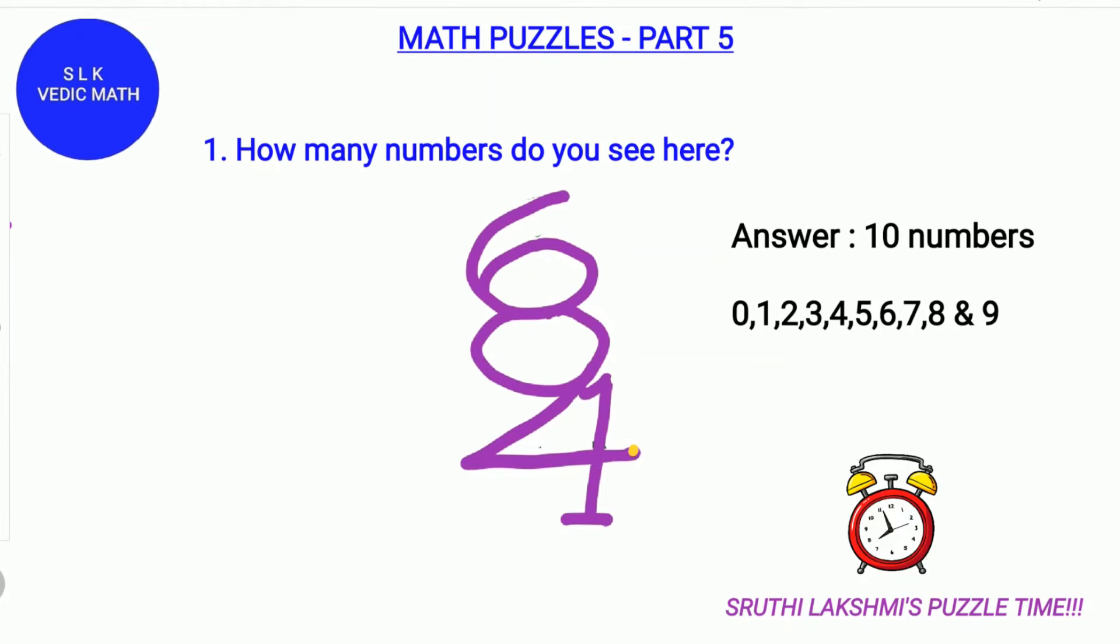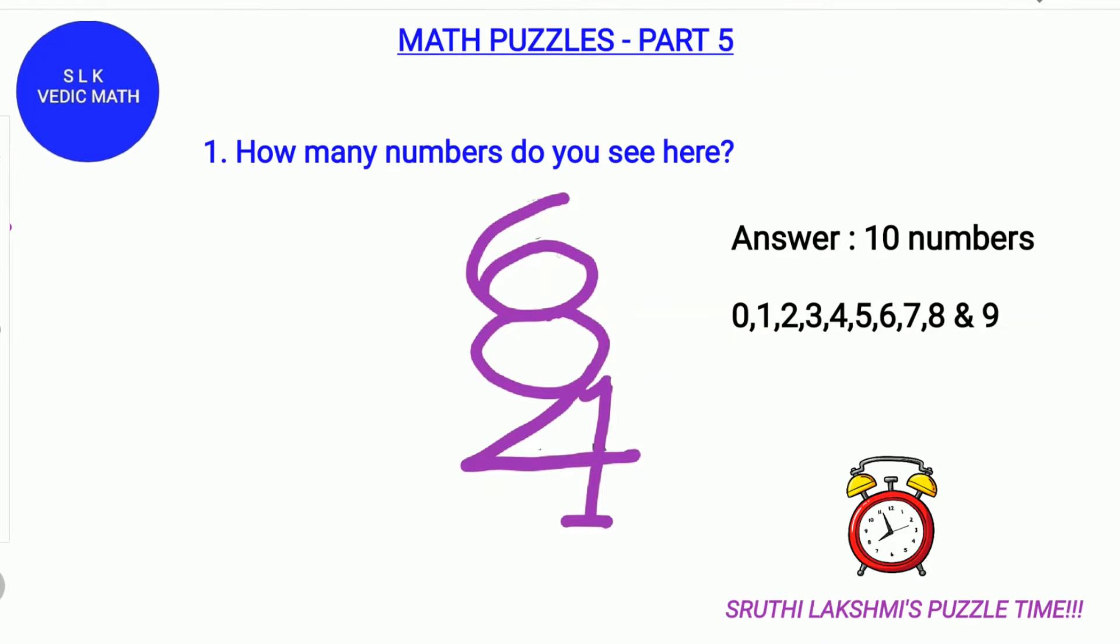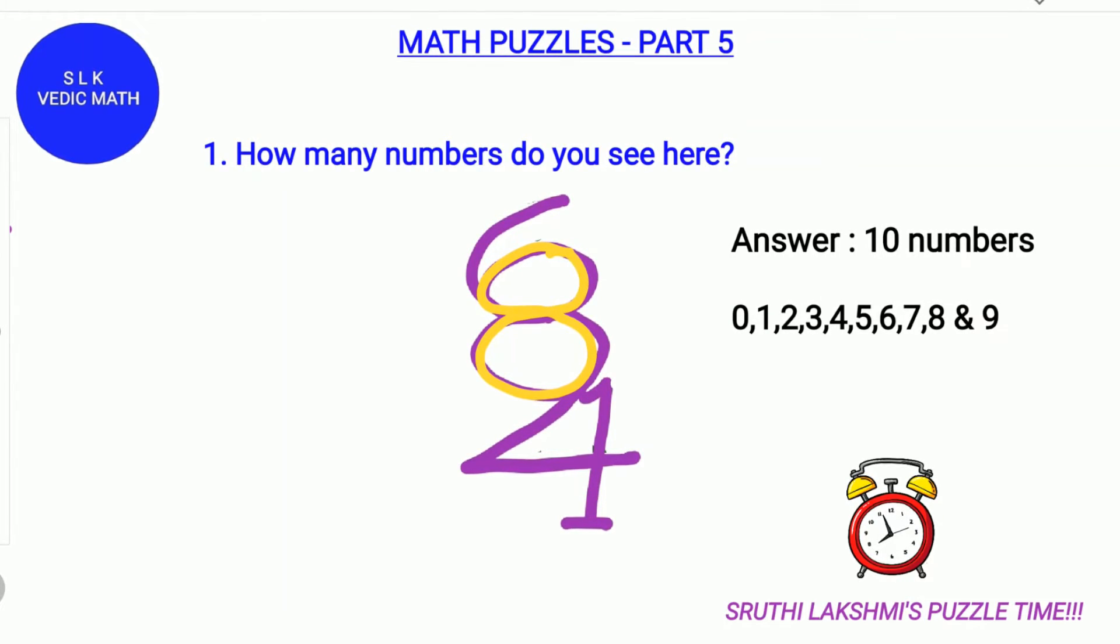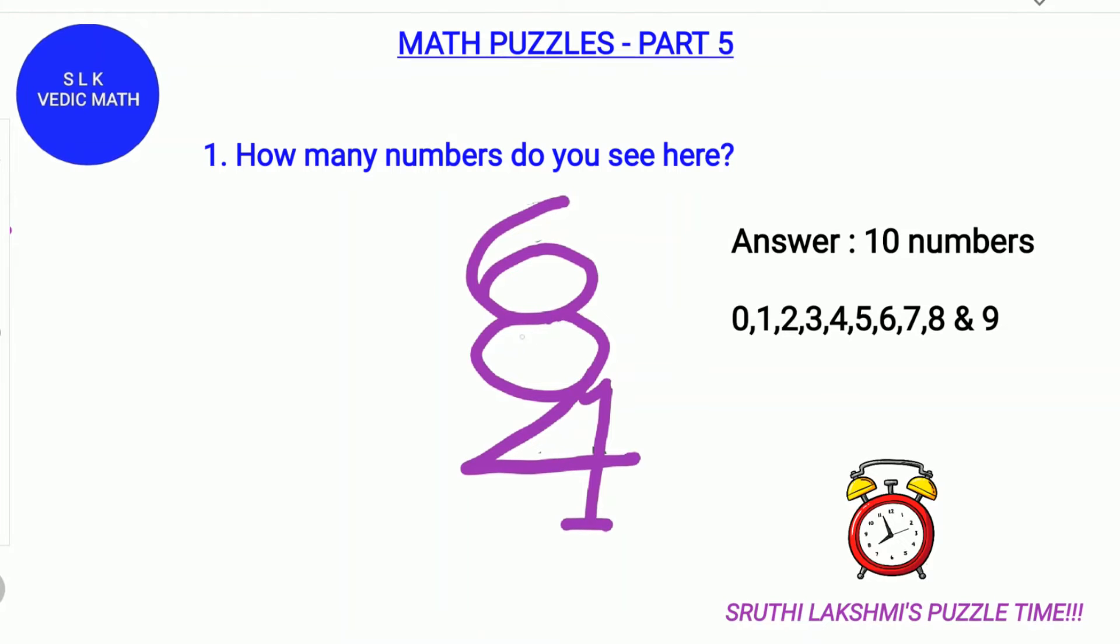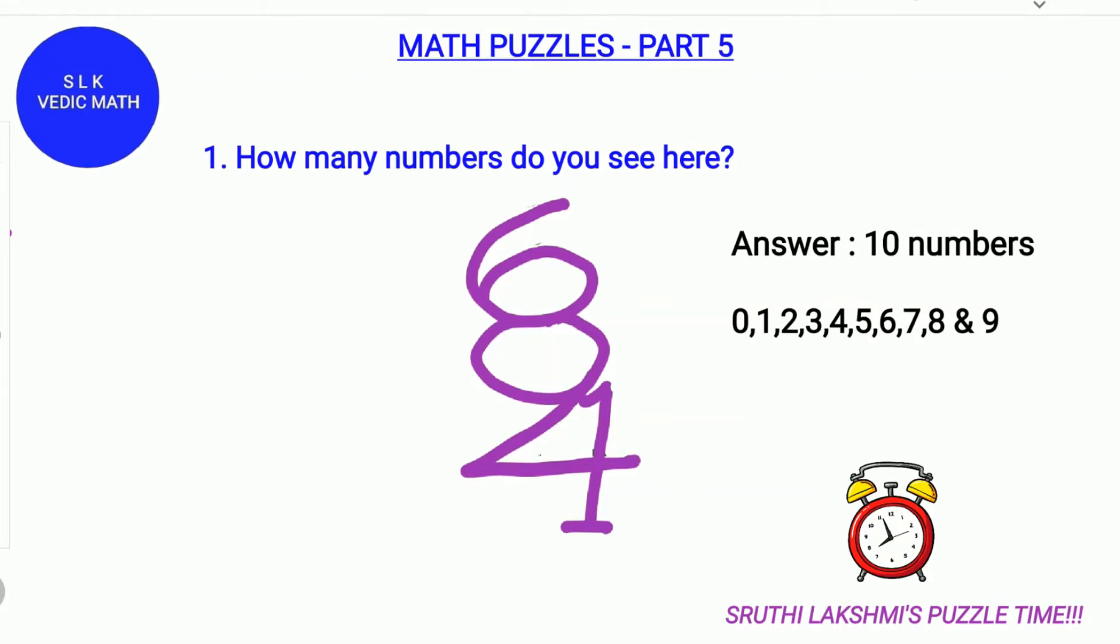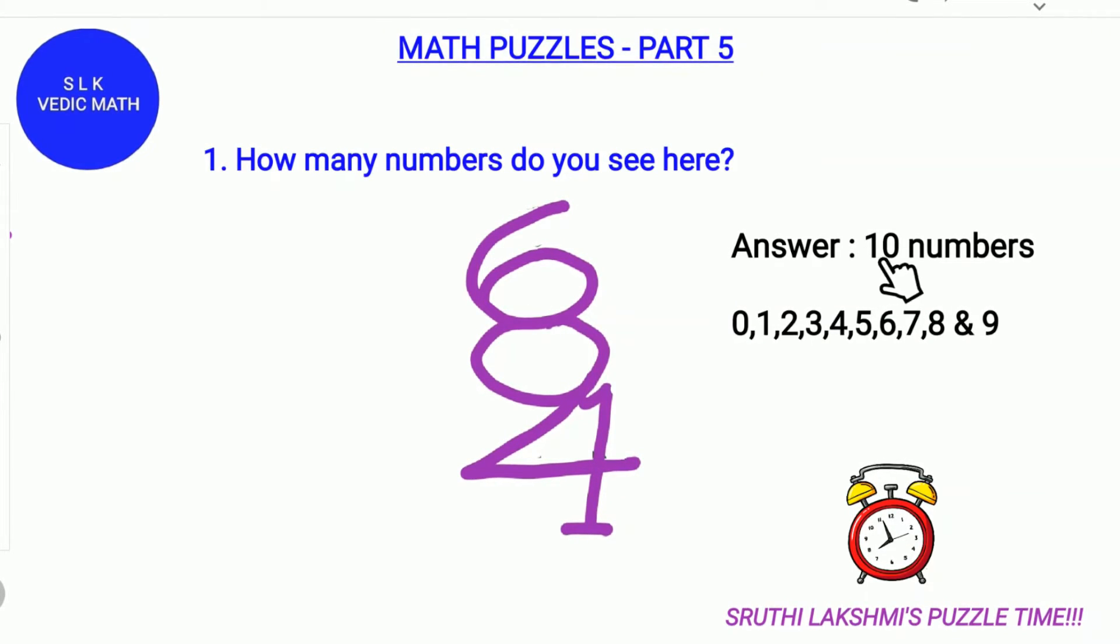Number 7 is also upside down. Number 8. Number 9. And this is how we get 10 numbers.